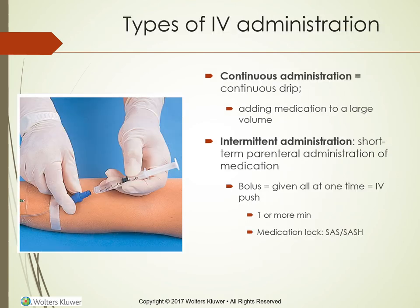Types of IV administration: continuous or intermittent. Continuous drip involves adding medications to a large volume and giving it continuously. Intermittent administration is short-term parenteral administration of medication. A bolus can be given, which is when medicine is given all at one time through an IV push over one or more minutes, through a medication lock — which is a saline lock or saline and heparin lock.